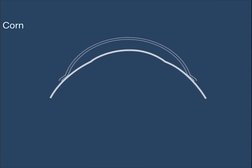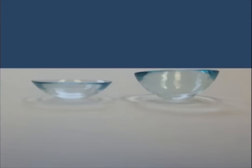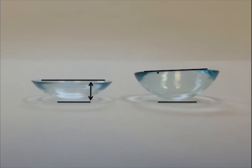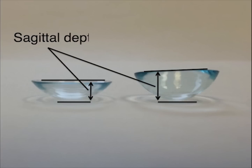The benefits of scleral lenses is that patients don't usually have a difficult time adapting to the lens like a traditional diameter or corneal gas permeable lens. Scleral lenses are unique in that they rest solely on the surrounding conjunctiva and underlying sclera. They completely vault the cornea. The amount of clearance that a scleral lens has over the central cornea is dependent on its sagittal depth, which is the distance from the flat plane made at the edge of the lens to the central portion of the lens.